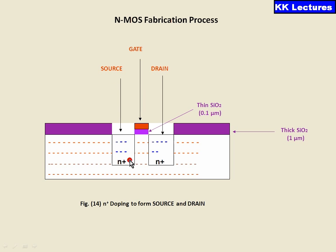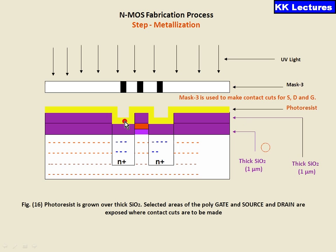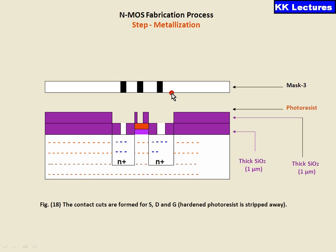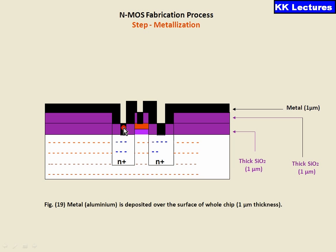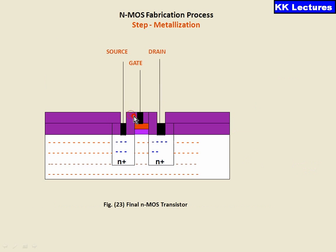Now source, gate, and drain are ready. To make connections, one more layer of SiO2 is grown and a photoresist is applied. Using UV rays, windows 1, 2, and 3 are cut and opened. The remaining photoresist is removed and metal is added such that it makes contact with the N-type diffusion regions and with the gate. After removing the unwanted photoresist material, we have source, gate, and drain formed with metal contacts. This completes the total fabrication process of the NMOS enhancement mode transistor.